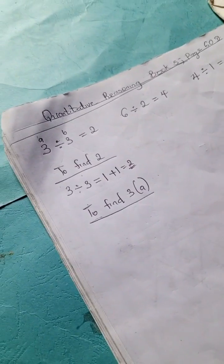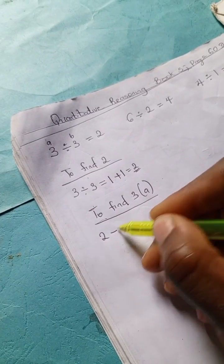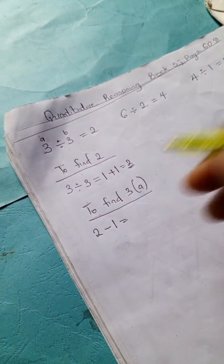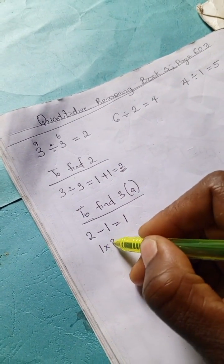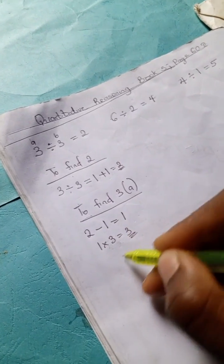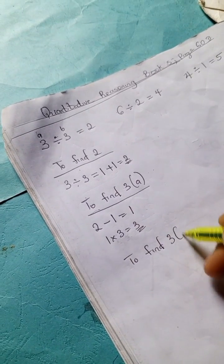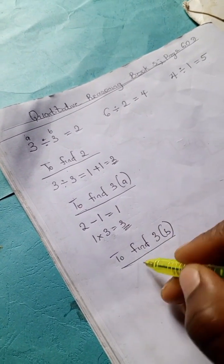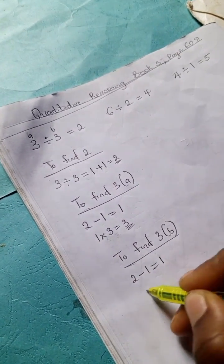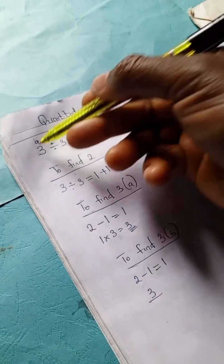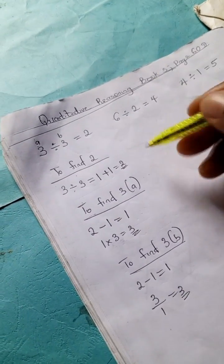To find a, just to differentiate, we're going to have 2 minus our imaginary 1, remember 1 was added here, equals 1. So 1 times 3 equals 3. And to find the other 3 which is b, we have our 2 minus 1 equals 1, and 3 divided by 1 is 3.